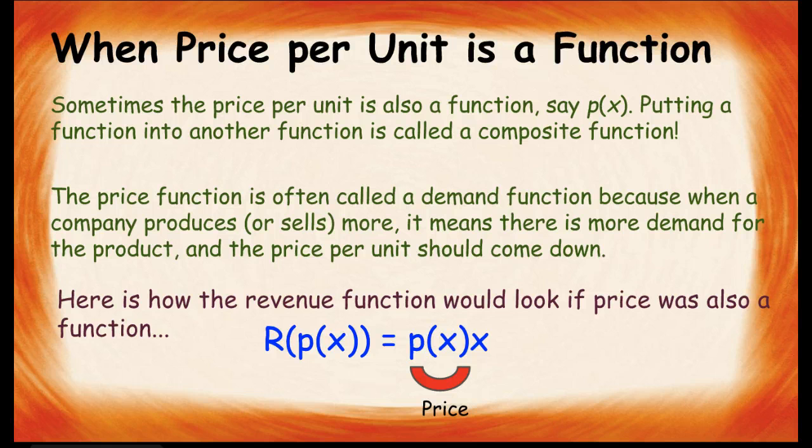Sometimes, the price per unit is also a function, and we'll call that P of x. If we put a function into another function, then this is called a composite function. So remember our original revenue function, price times quantity sold. But now, we're saying that price is not just a constant, but it's a function.